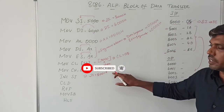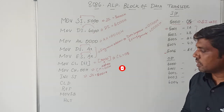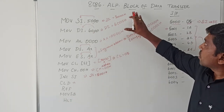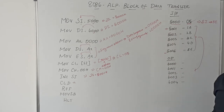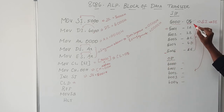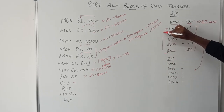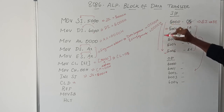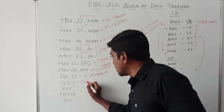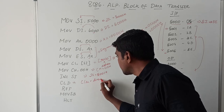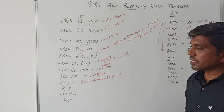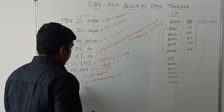You now point to the first data. The next instruction is CLD, which is a very important instruction because a block of data is being transferred from source index to destination index. CLD represents clear direction flag. After execution of this instruction, the direction flag is set to 0.